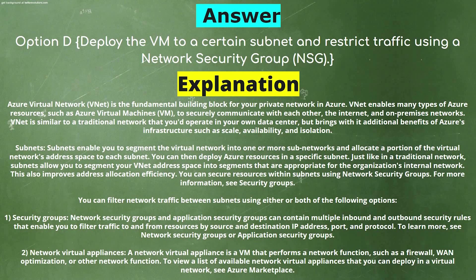Explanation: Azure Virtual Network is the fundamental building block for your private network in Azure. VNet enables Azure resources such as virtual machines to securely communicate with each other, the internet, and on-premises networks. VNet is similar to a traditional network in your own data center but brings additional benefits of Azure's infrastructure such as scale, availability, and isolation. Subnets enable you to segment the virtual network into one or more subnetworks and allocate a portion of the virtual network's address space to each subnet.